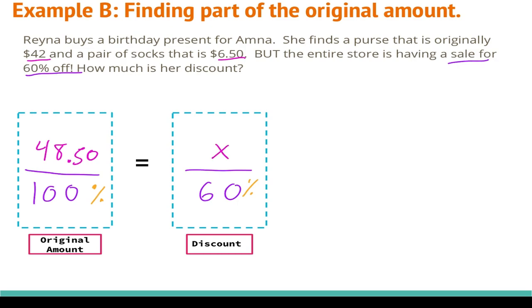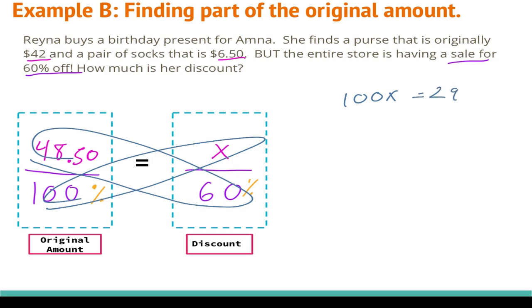Now I need to cross multiply. I'm going to do 100 times x, and I'm going to do 60 times 48.50. 100 times x is 100x. 48.50 times 60 is 2,910. So now I've got my one-step equation, so I'm going to draw my wall. Divide both sides by 100. 100 divided by 100 is going to cancel and give me 1 or 1x. 2,910 divided by 100 is $29.10.